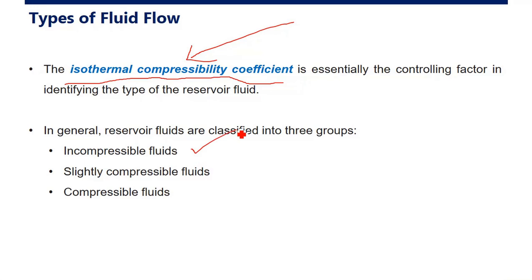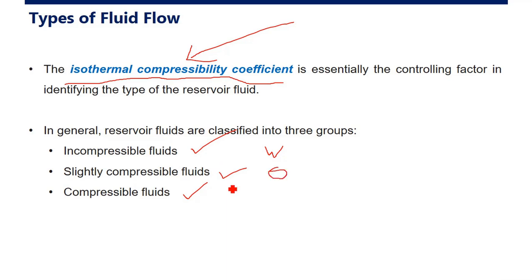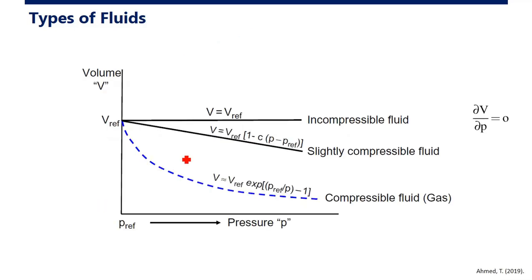The three groups are: incompressible fluid, slightly compressible fluid, and compressible fluid. Incompressible fluid is usually water. Slightly compressible fluid — which can still be compressed a little — is, for example, oil. And compressible fluid is of course gas.